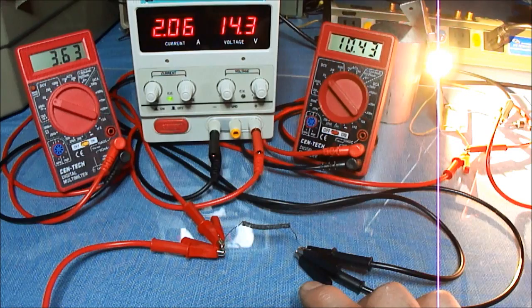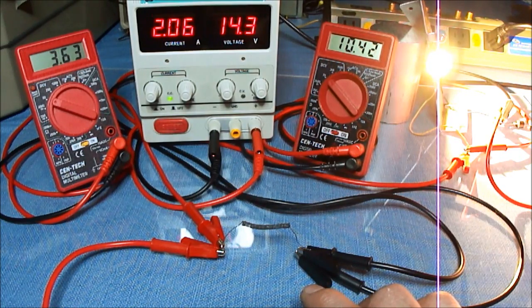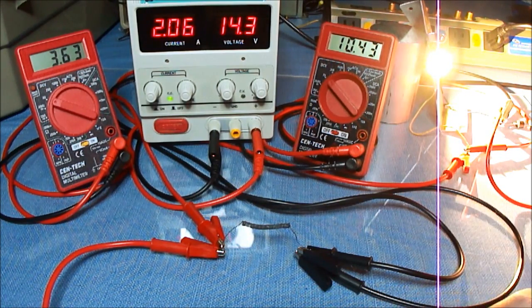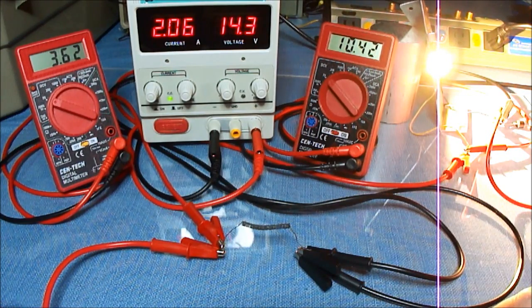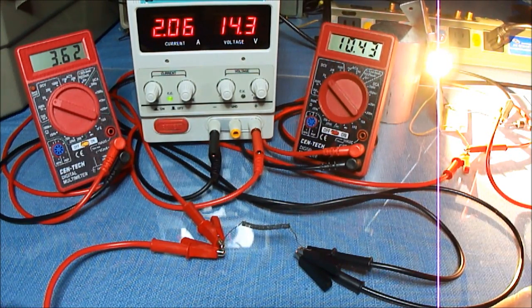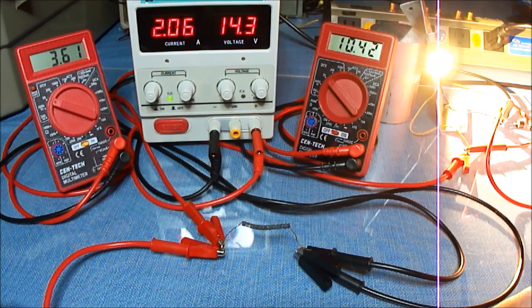This wire coil is 1.2 ohms resistance cold. There must be a certain resistance where the voltage will start shifting back to the LED.